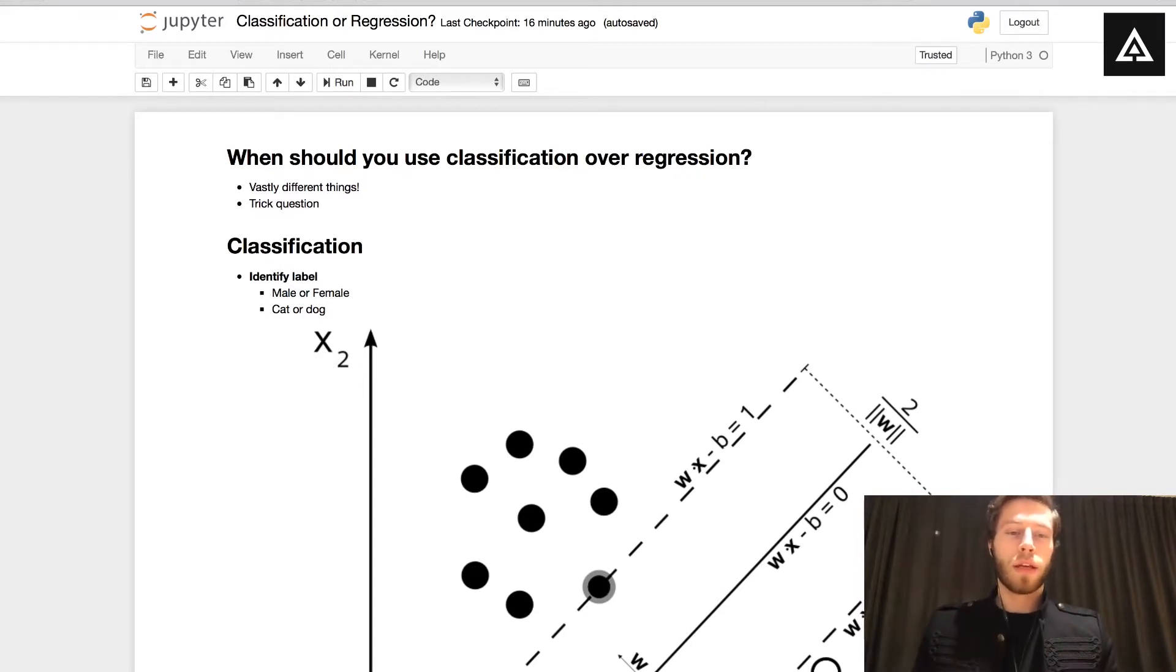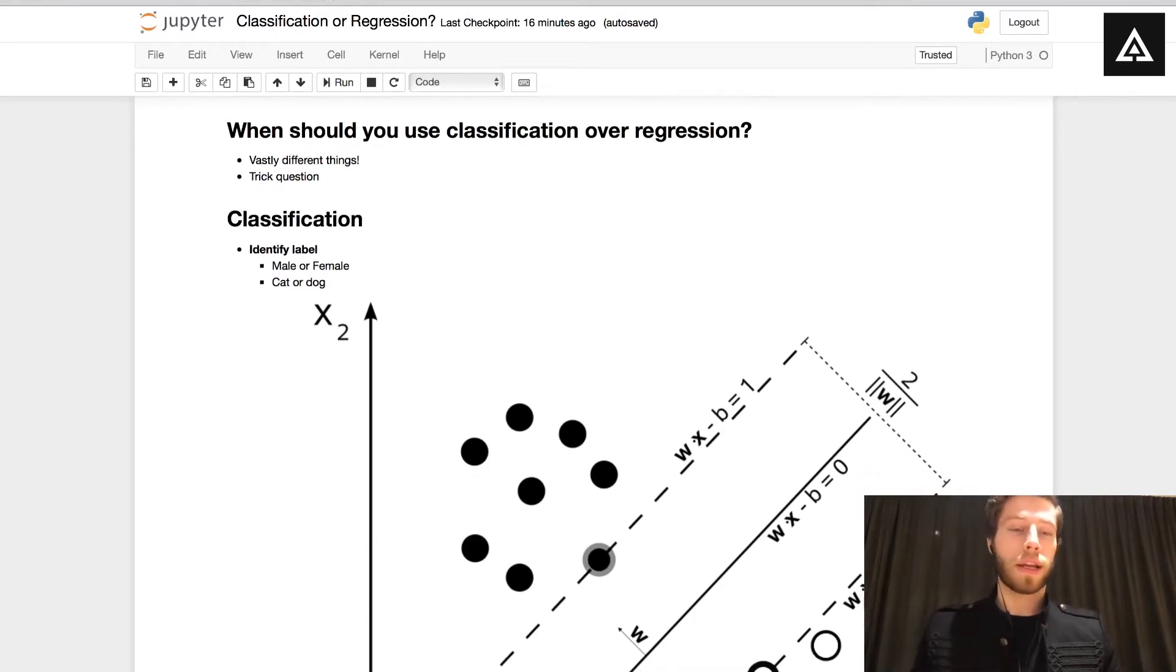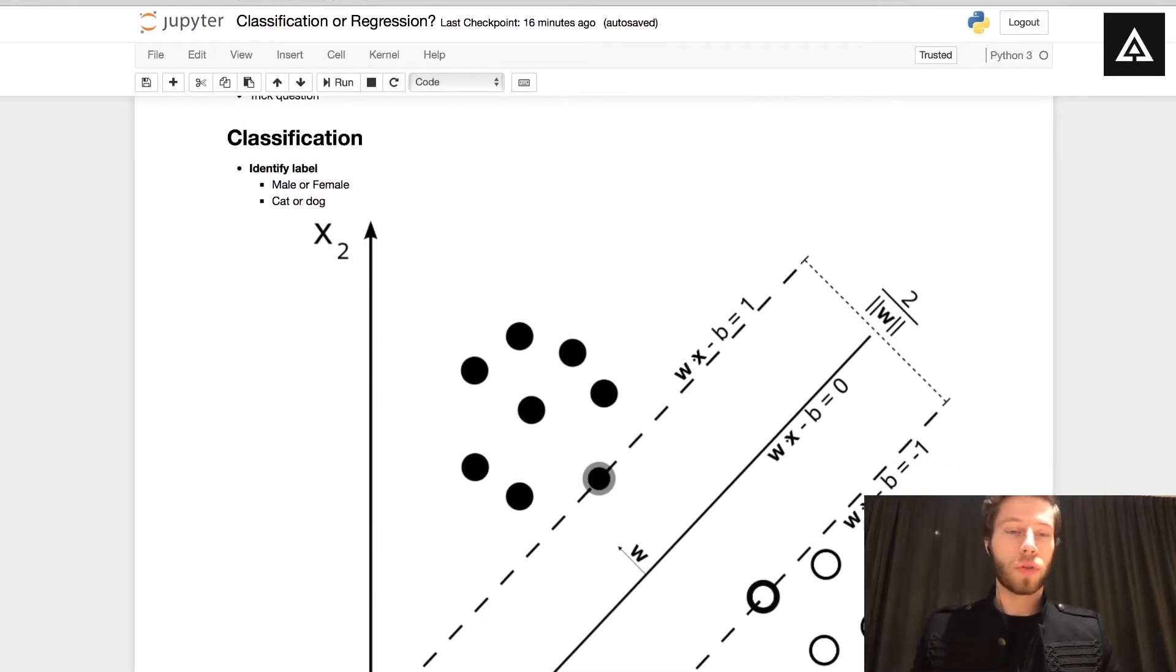So let's get going. First of all, classification and regression are two vastly different things. And that's why it's a trick question. They're not used in the same way at all. They're two different things. So we're going to go through how they are different, why they're different and when you're going to use both of them. Each of them has their own place and we're going to find out which of them you should use when.